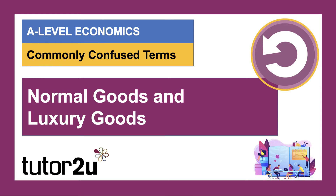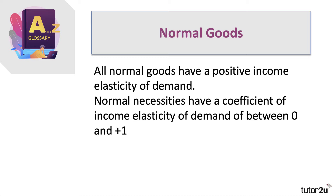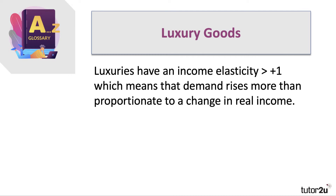Another pair of commonly confused terms are luxury and normal goods. Normal goods is any good or service with a positive income elasticity of demand — in other words, demand goes up as your real income rises. Normal necessities have an income elasticity of demand greater than zero but less than plus one, so for example plus 0.8. Whereas a luxury good is a category of product where the income elasticity of demand is greater than plus one — demand rises more than proportionate to a change in real incomes.